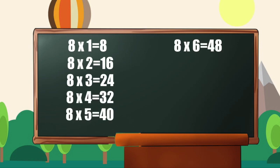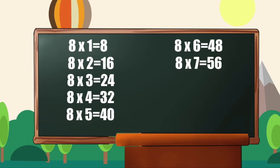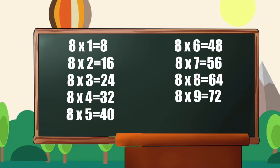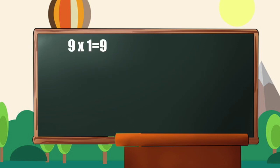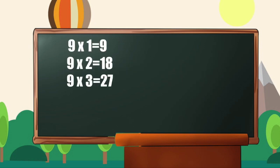8 6s are 48, 8 7s are 56, 8 8s are 64, 8 9s are 72, 8 10s are 80. Table of 9: 9 1s are 9, 9 2s are 18, 9 3s are 27, 9 4s are 36.